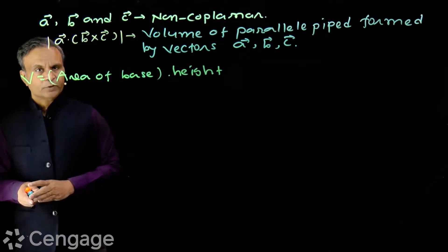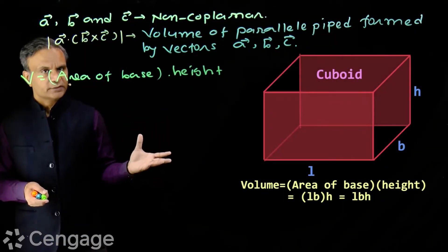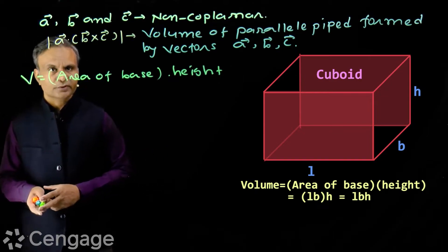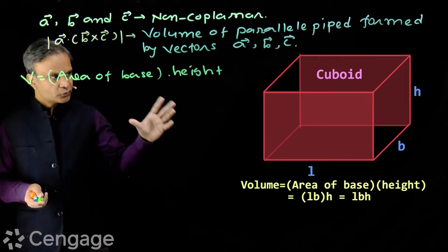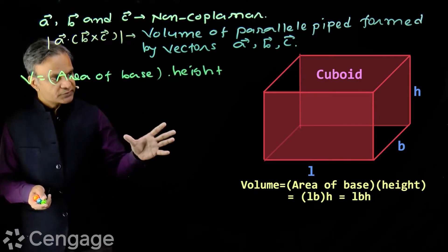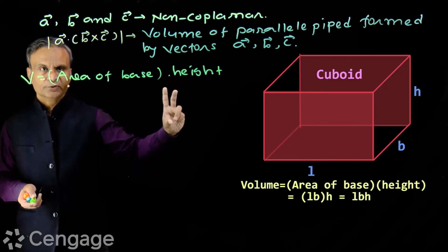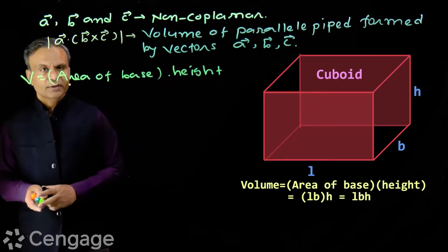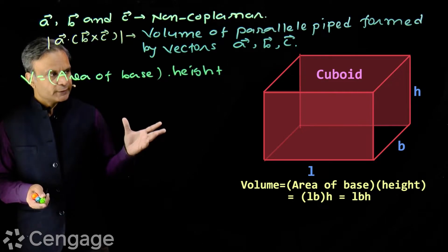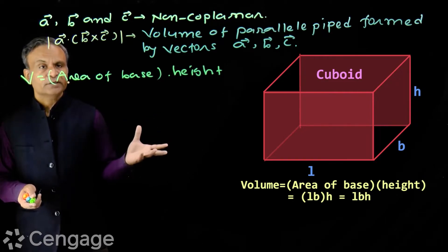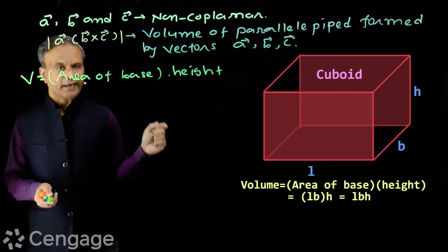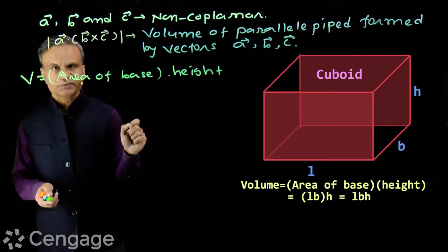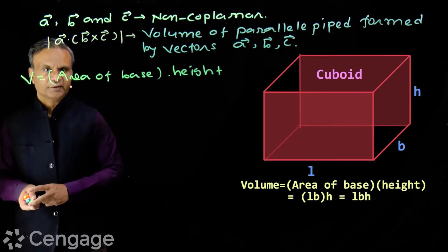For example, consider a cuboid — a prism having a rectangular base. If the dimensions are L, B, and H, where H is the height and L and B are length and breadth, then the volume of this cuboid is L times B times H, where L times B is the area of the base and H is the height.